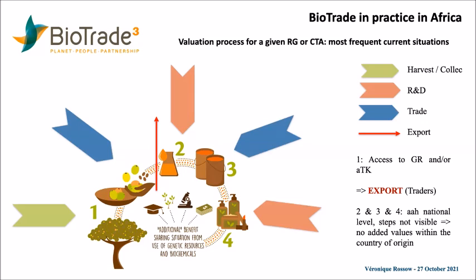Then you have the second step, which is illustrated by a chemical device with a drop of liquid. This step illustrates the first transformation that occurs in a value chain from the resource to what is called a derivative or an ingredient. This ingredient corresponds to the first step of the valorization of the natural resource, the genetic resource or the Associated Traditional Knowledge.